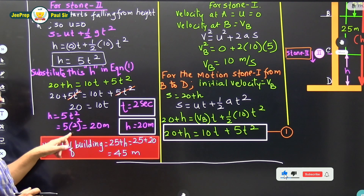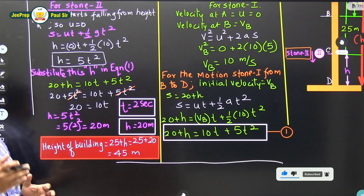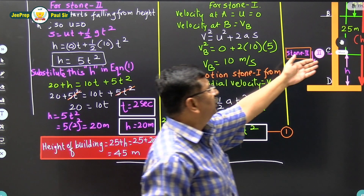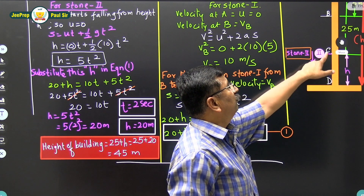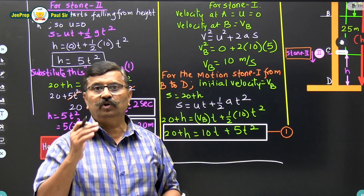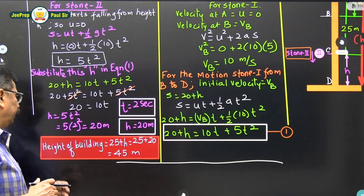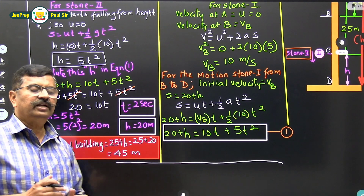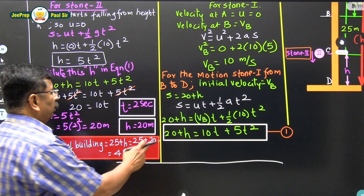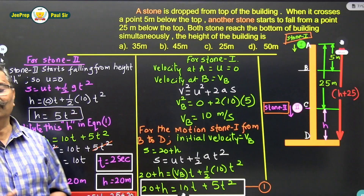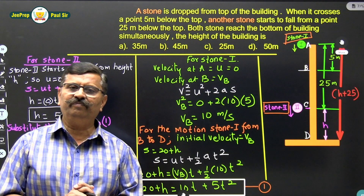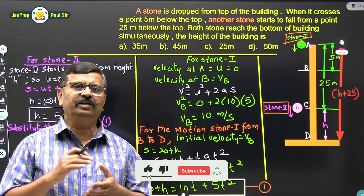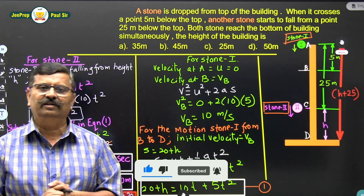Therefore h = 5t² = 5 × 4 = 20 meters. Since point C is 25 meters below the top, the total height of the building is 25 + 20 = 45 meters. I hope all of you understood this problem. If you want to perform well in the JEE examination, I strongly recommend subscribing to our channel. Thank you.